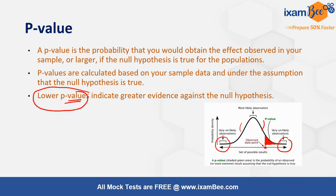A lower p-value means there is evidence against the null hypothesis, which is why you reject the null. I hope the idea of what exactly a p-value is and what the alpha value is is now clear. The alpha value gives you the acceptable level of significance, set by the experimenter before the analysis.